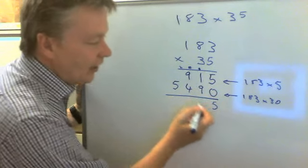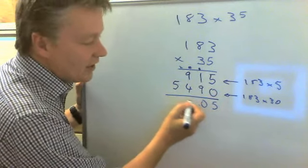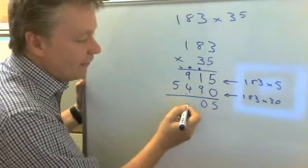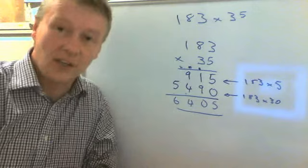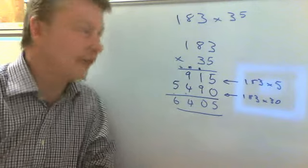And then if I add the 2 together: 5 add nothing is 5, 9 add 1 is 10, 9, 10, 14, 6. So the answer to my question is 6,405.